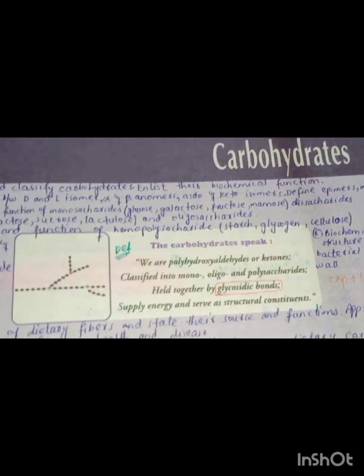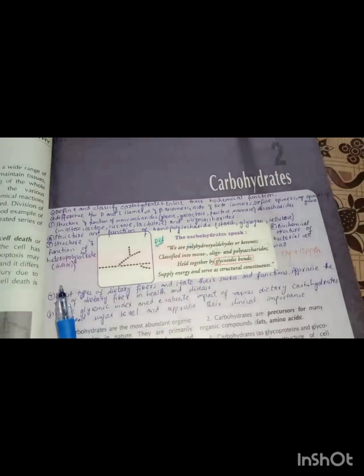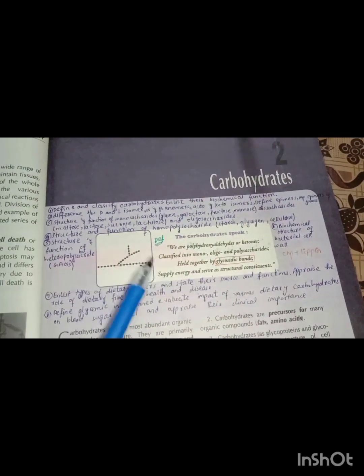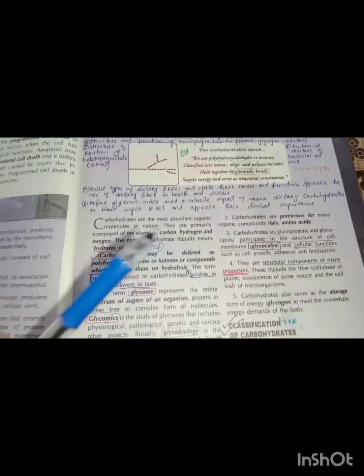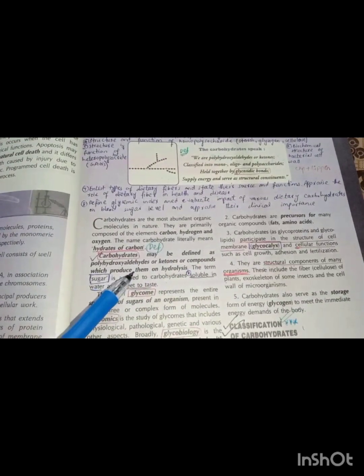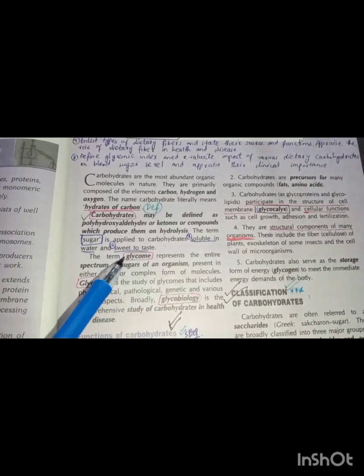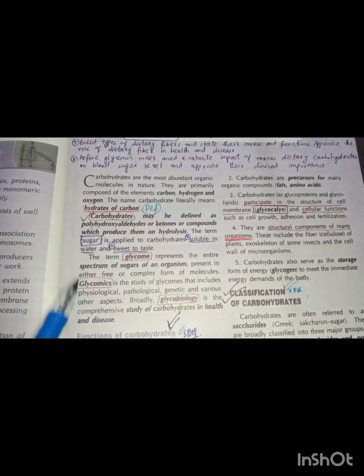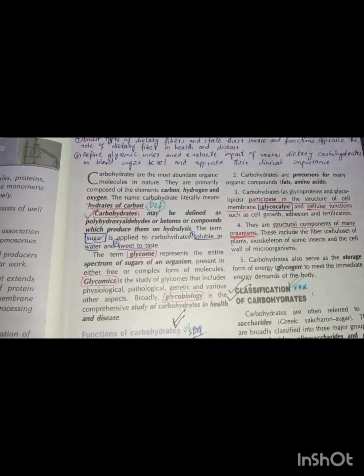Now I am going to do carbohydrates and mystery markings. We will do this in our own way. You have to start with the definition. After that, you have to study glycomics and glycobiology — the study of carbohydrates.